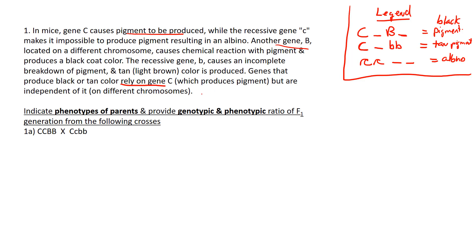Now we're going to identify the parent phenotypes. It says: indicate the phenotypes of the parents and provide the genotypic and phenotypic ratio of the F1 generation from the following crosses. Once we have the legend, this is much easier. If I have capital C and capital B, regardless of the other alleles, this is going to be black. The other parent has capital C but two little b's, giving a tan pigment. So we have a black and a tan parent mating.